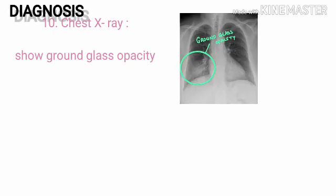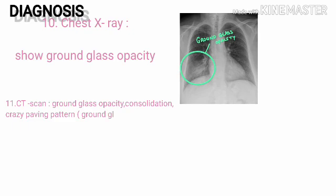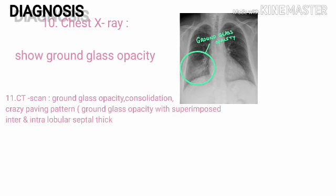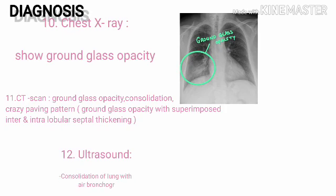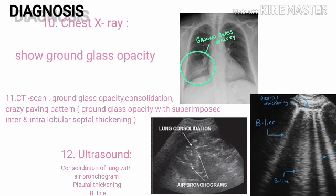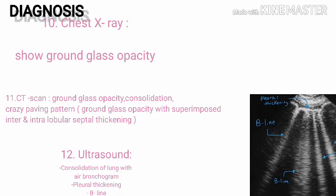In chest X-ray, ground glass opacity is shown — as you can see via the circle. CT scan shows ground glass opacity, consolidation of lung, and crazy paving pattern. Crazy paving pattern means ground glass opacity with superimposed inter- and intralobular septal thickening. In ultrasound: consolidation of lung with air bronchogram, pleural thickening, and B-lines — as shown in the photo, with lung consolidation, air bronchogram, and B-lines denoted by arrows.